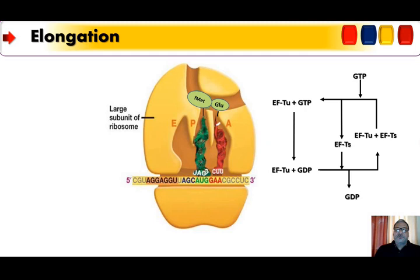The second step is peptide bond formation. This is catalyzed by the enzyme peptidyl transferase. When a new codon arrives and the corresponding transfer RNA comes carrying the amino acid, a peptide bond is established between the first amino acid and the second amino acid. The carboxyl end of the amino acid bonded to the transfer RNA in the P site is coupled from the transfer RNA and becomes joined by a peptide bond to the amino group of the amino acid linked in the transfer RNA at the A site.